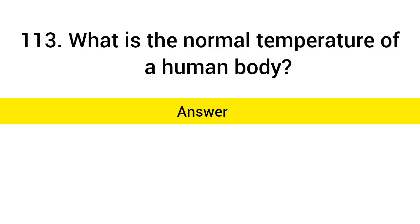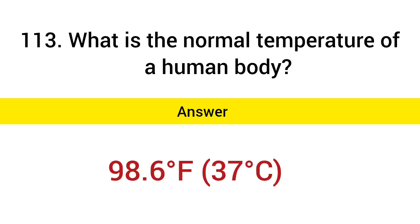What is the normal temperature of a human body? Answer: 98.6 degrees Fahrenheit, 37 degrees Celsius.